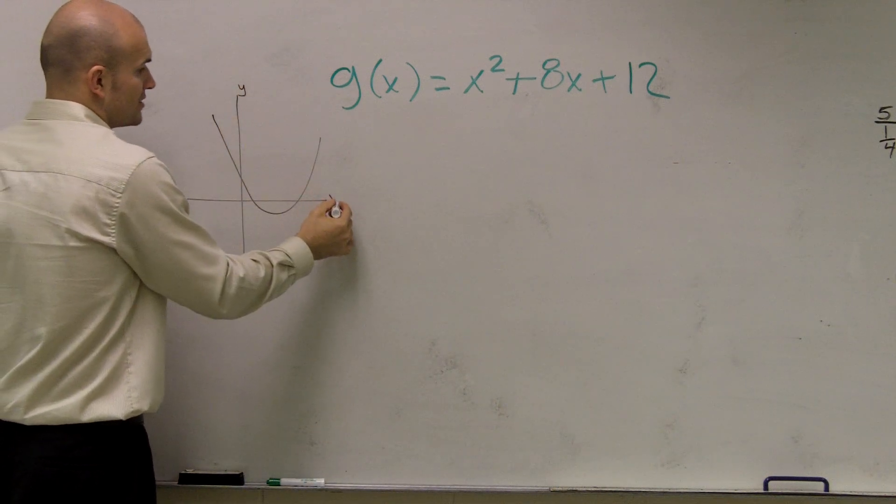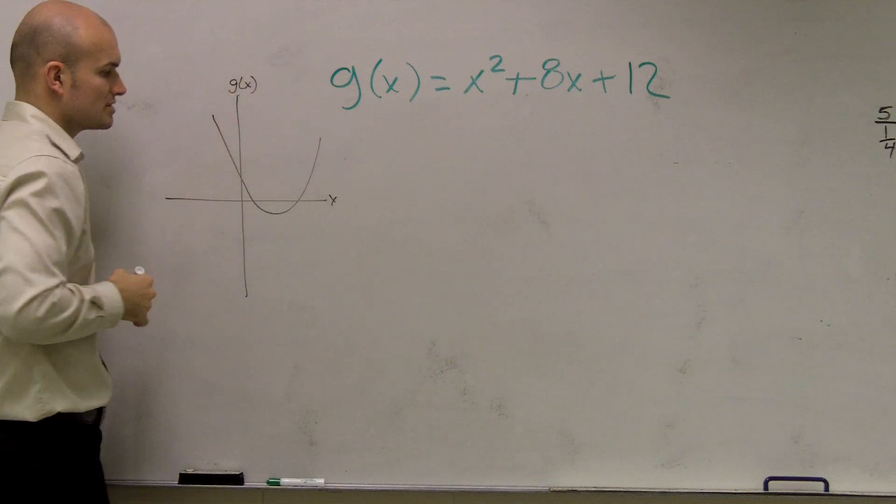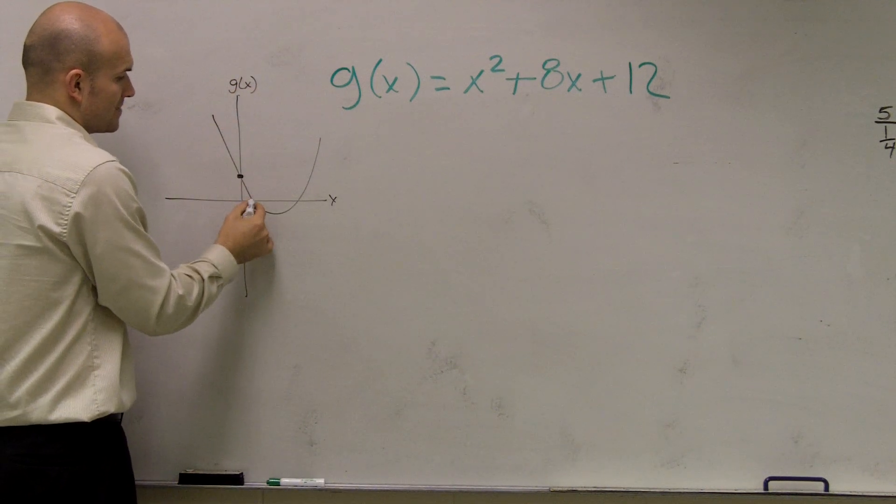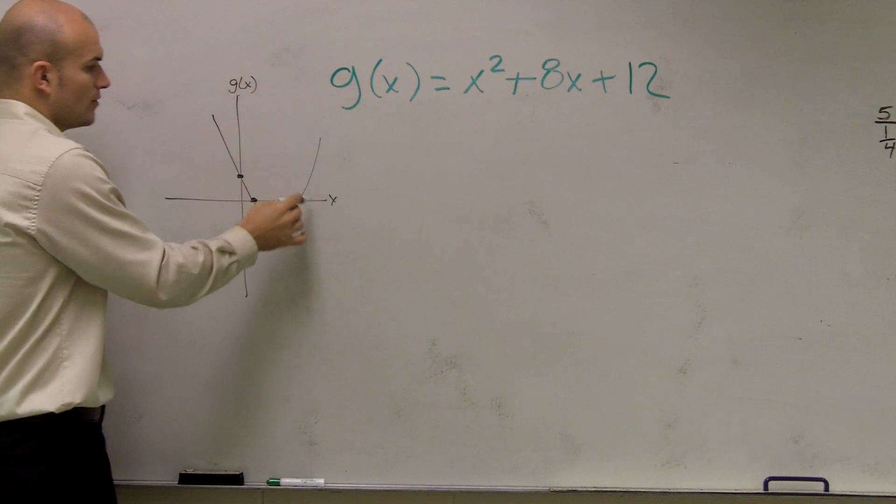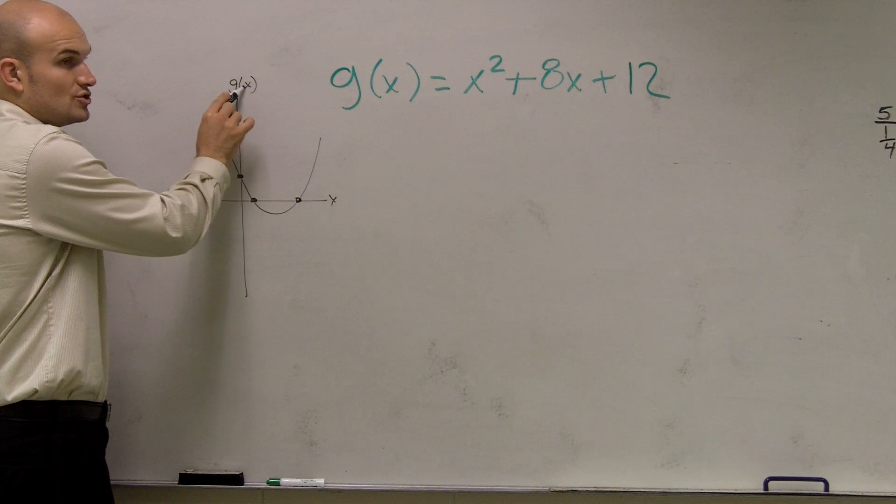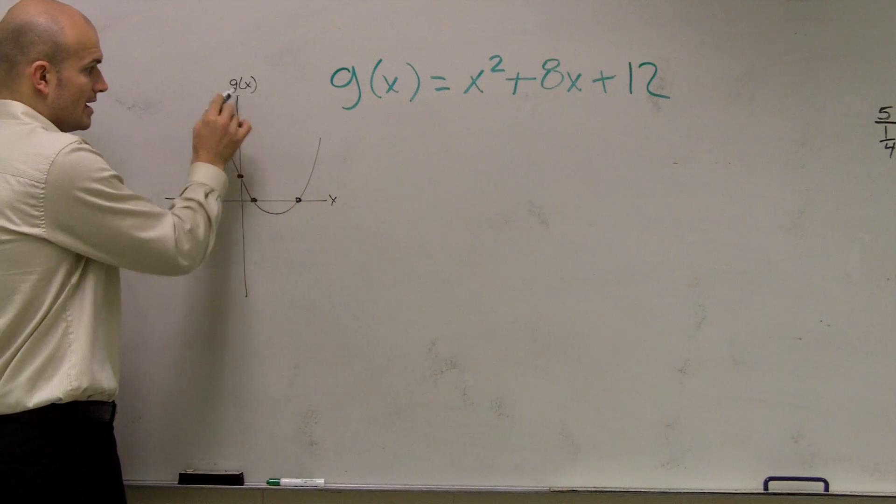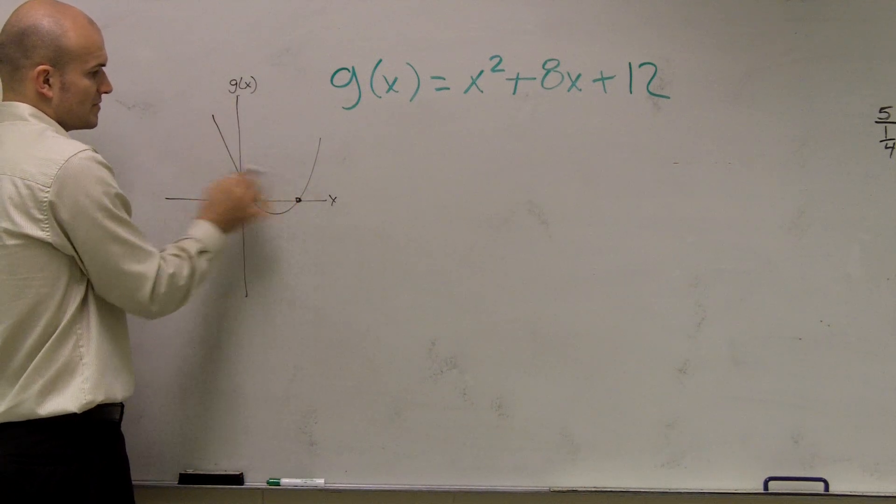Now remember, when we're trying to find the intercepts, instead of y, we're using a function. So our output is going to be g of x. Our intercepts are when our other value is equal to zero. So the x-intercepts are when g of x is equal to zero. And our g of x intercept is when x equals zero.